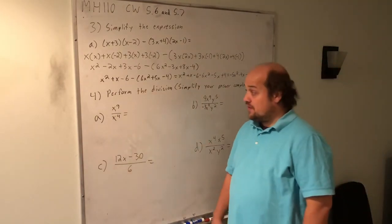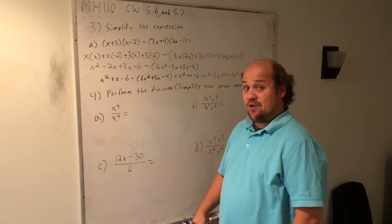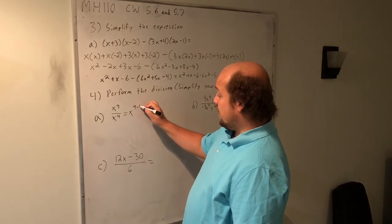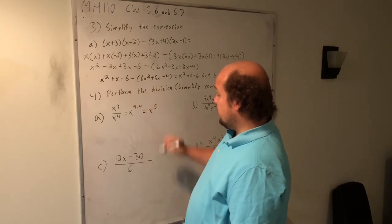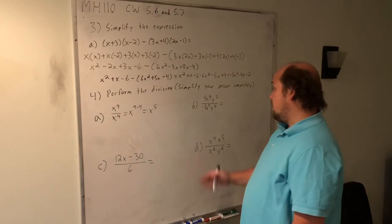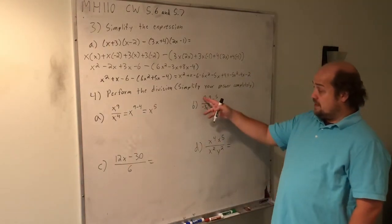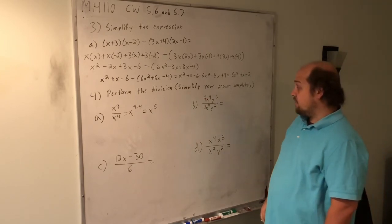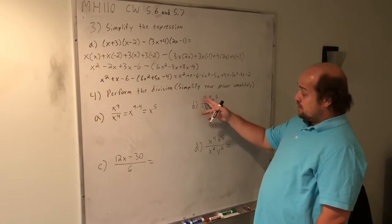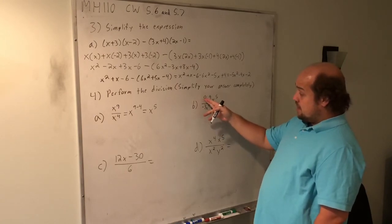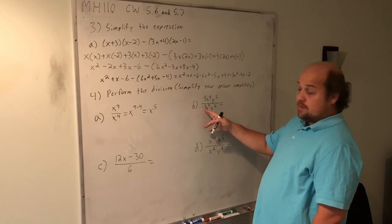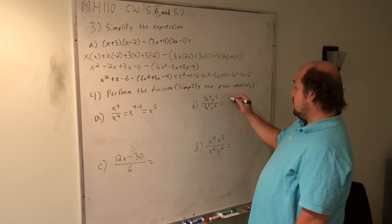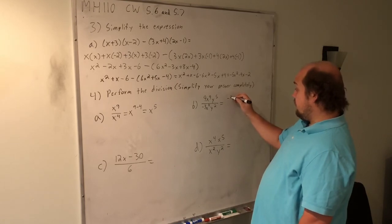Now moving on to division. When I'm doing these division problems, I'm really thinking about my exponent rule that says I take the power on top minus the power on the bottom. That's how I end up with x to the 5th here. When I do part B, I need to first deal with the division of the coefficients. 9 divided by negative 3 gives me negative 3. I then take the power on top minus power on bottom for each variable: x to the 9 minus 4, y to the 5 minus 2.